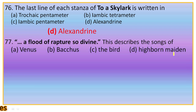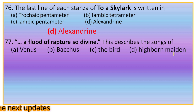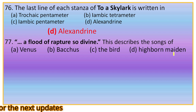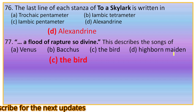Question 77: 'A flood of rapture so divine' — this describes the songs of — options: Venus, Bacchus, the bird, the Highborn Maiden. This line is from stanza 13. The full line is: 'Praise of love or wine that painted forth a flood of rapture so divine.' This describes the song of the bird, because the song of the bird is much more divine than a love song or a song in honor of Bacchus.